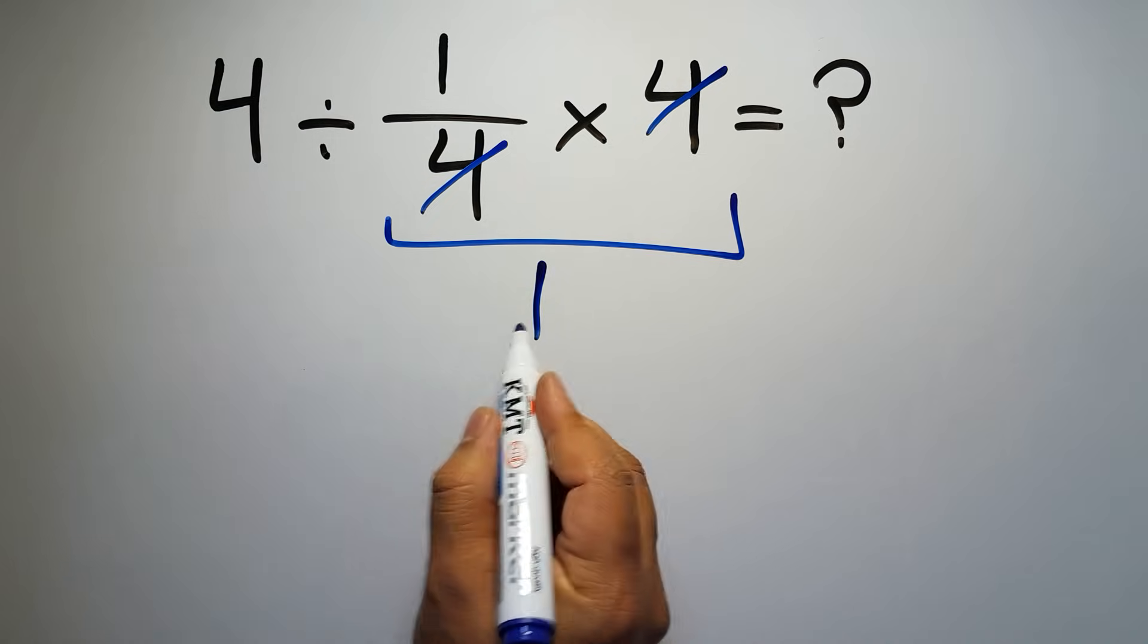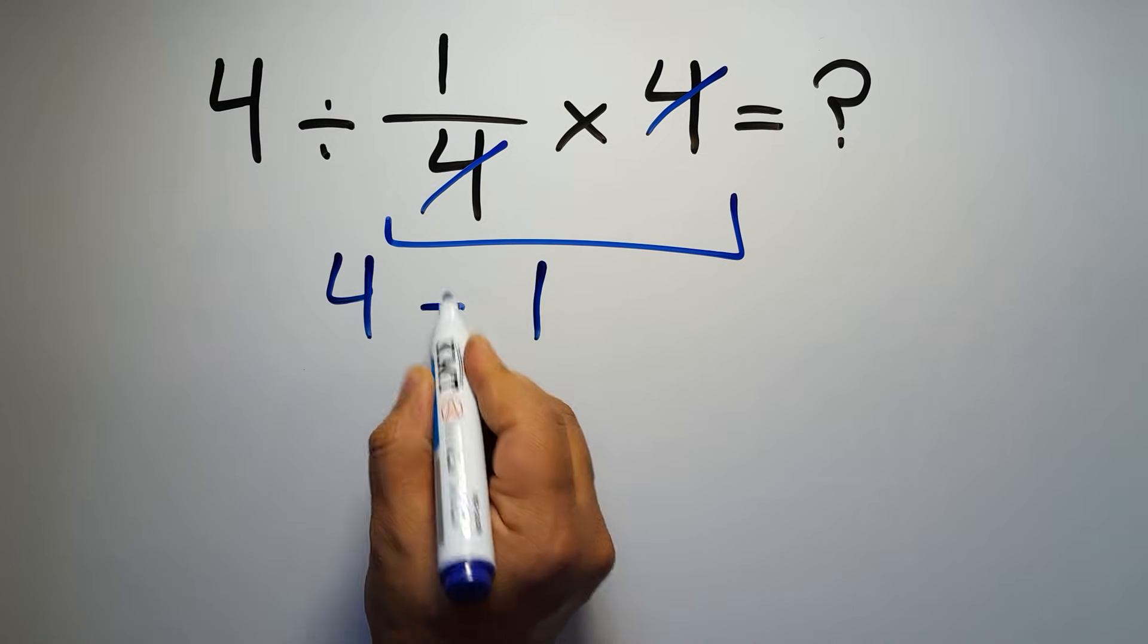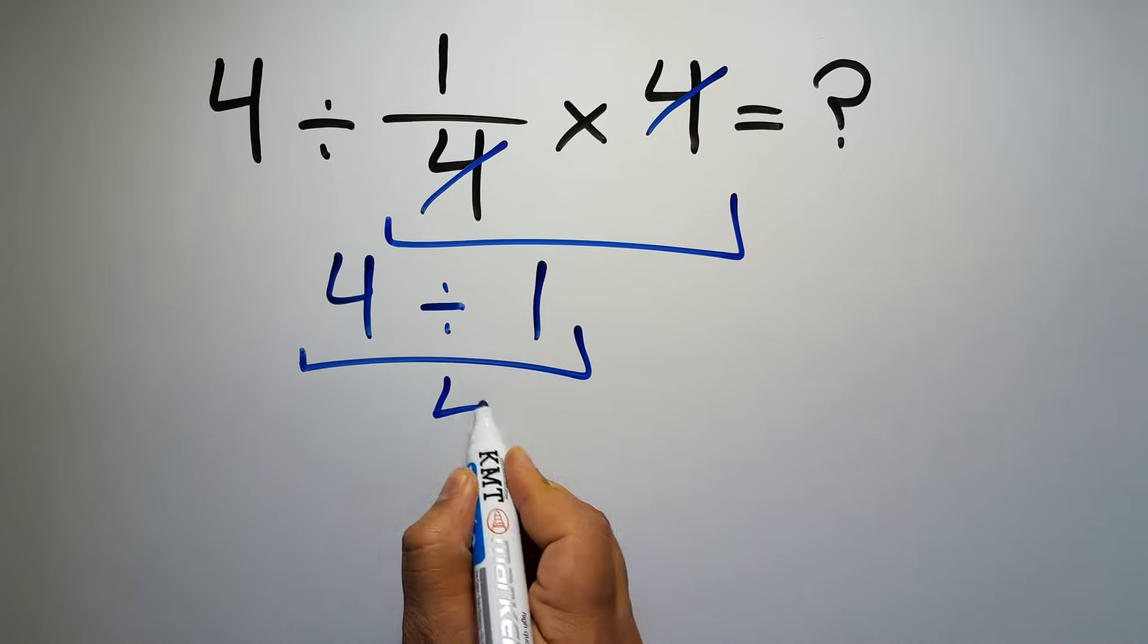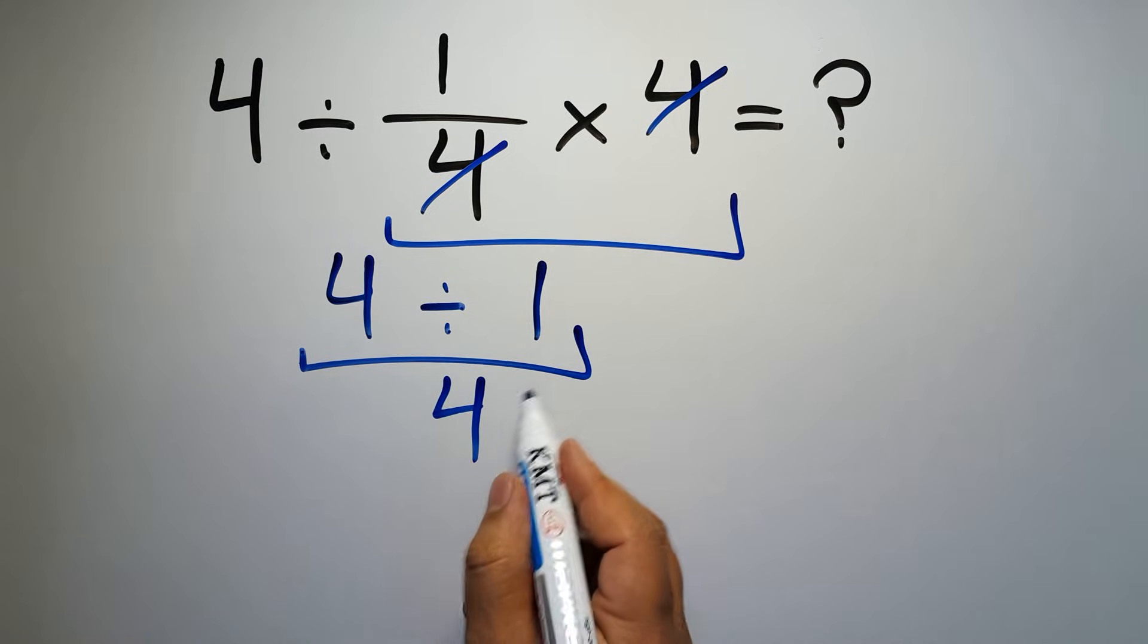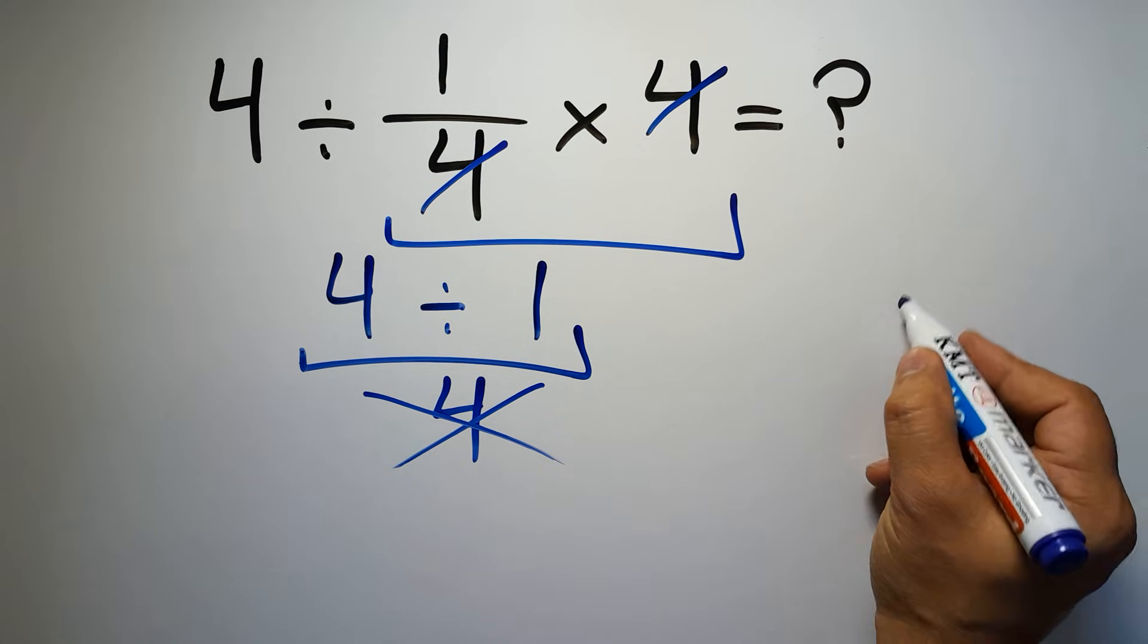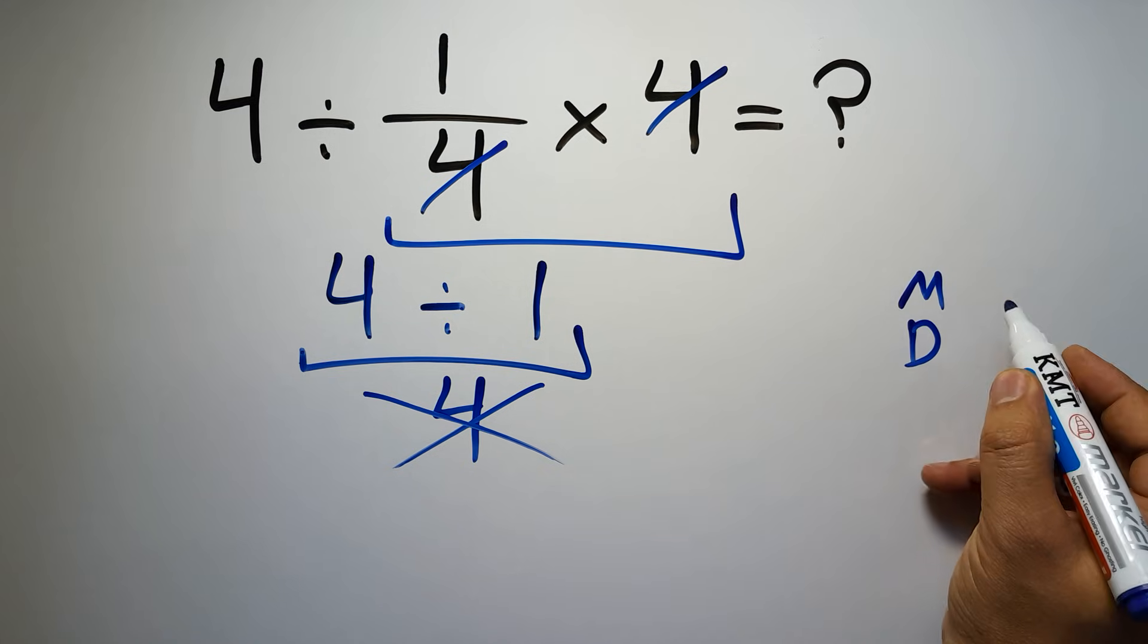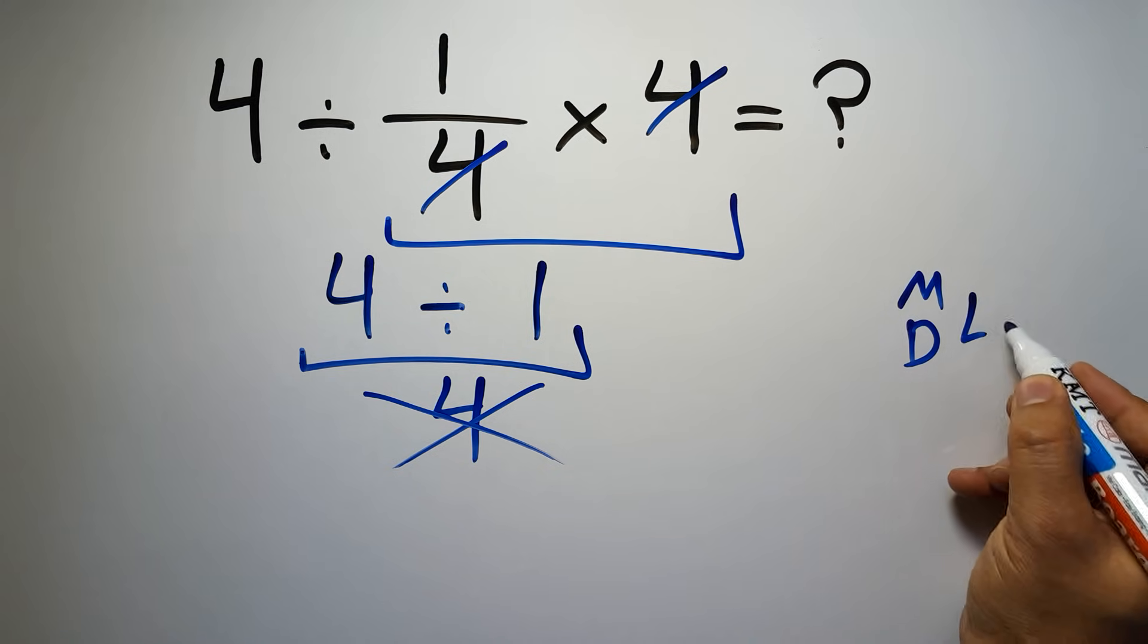So 4 divided by 1 is just 4. But this answer is not correct, because according to the order of operations, multiplication and division have equal priority and we have to work from left to right.